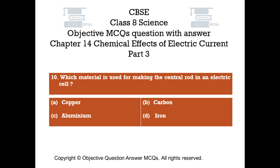Question number 10. Which material is used for making the central rod in an electric cell? Option A: Copper. Option B: Carbon. Option C: Aluminium. Option D: Iron.